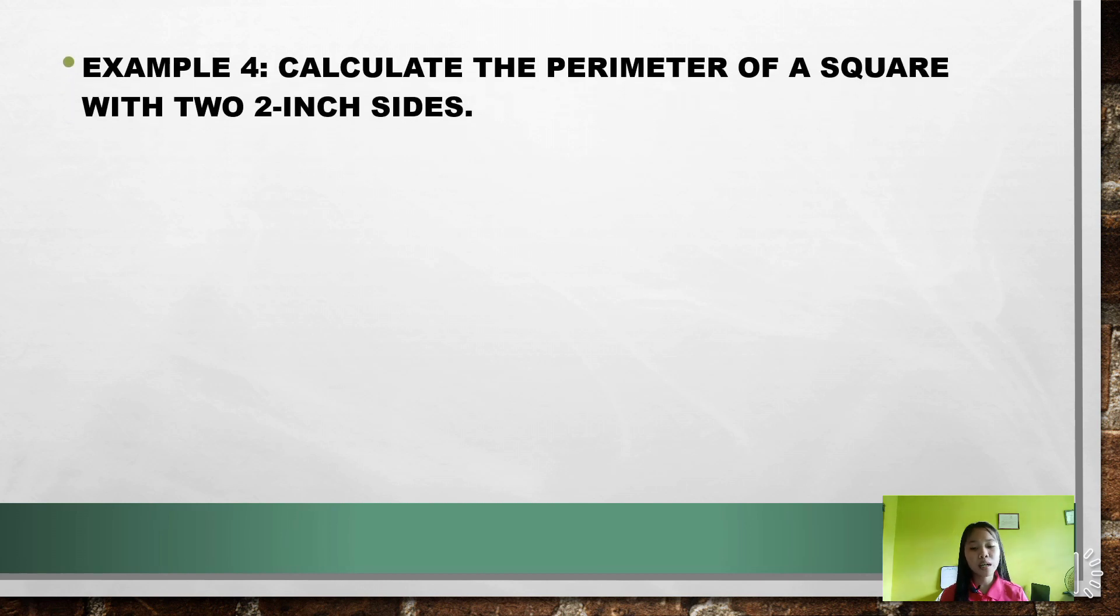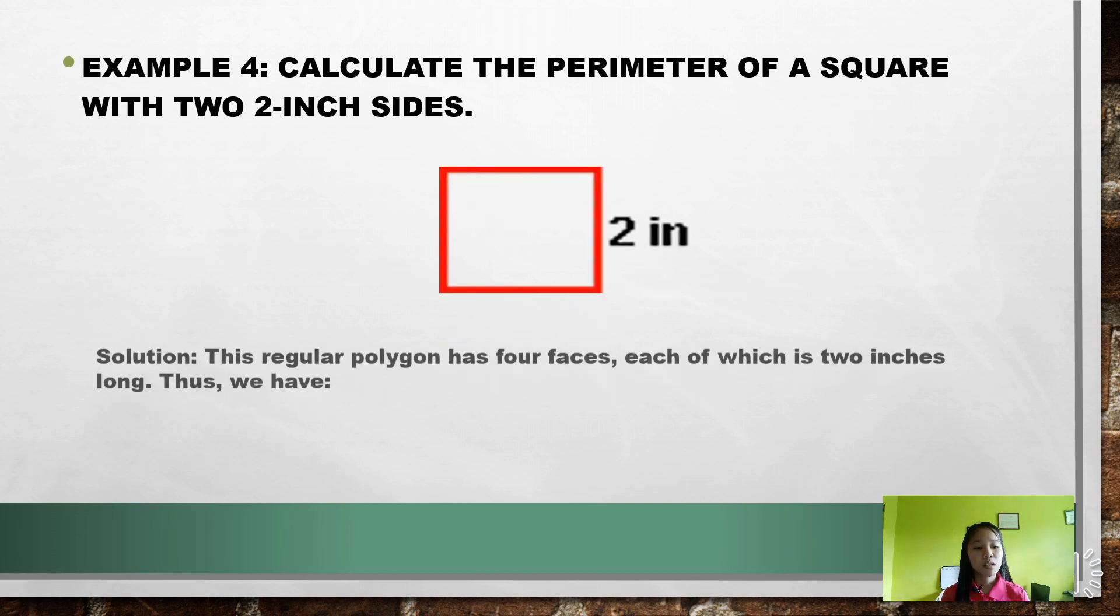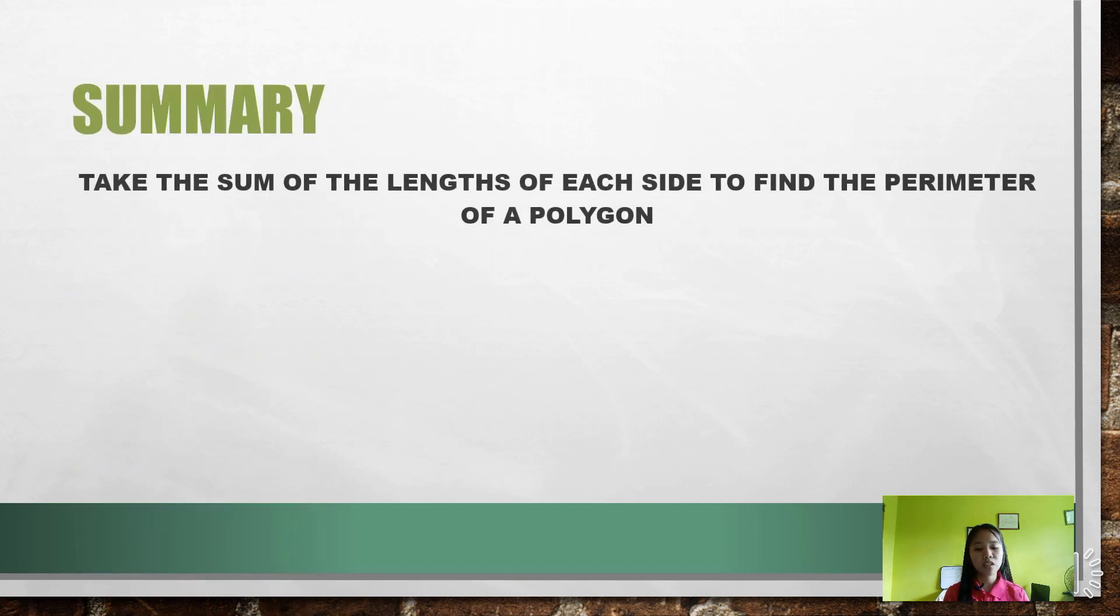Our example number 4: Calculate the perimeter of a square with 2 inch sides. For our solution, this regular polygon has 4 faces, each of which is 2 inches long. Thus, we have P = 4 × 2 inches = 8 inches. Our perimeter is 8 inches.